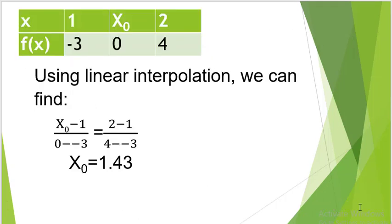Now we use linear interpolation to get that initial approximation. I have a table: x and f(x). When x is 1, the function value is negative 3. Our initial approximation x naught has function value 0. Then x equals 2, the function value is 4. Using linear interpolation, we equate gradients: x naught minus 1 over 0 minus negative 3 equals 2 minus 1 over 4 minus negative 3. Solving that, we come up with 1.43.